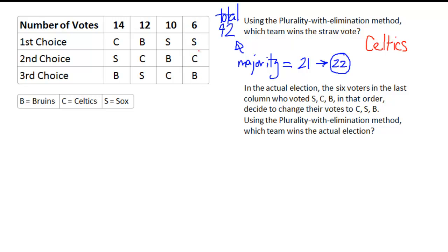let's say that these six voters right here in this last column, these six voters that voted Sox, Celtics, and Bruins in that order decide to change their votes to Celtics, Sox, and then Bruins in that order.